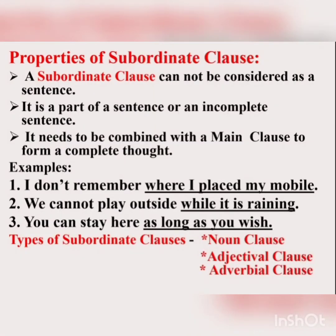Now we are going to see the properties of a subordinate clause. A subordinate clause cannot be considered as a sentence — it is a part of a sentence or an incomplete sentence. It needs to be combined with the main clause to form a complete thought. For example, 'I don't remember where I placed my mobile.' The underlined part — 'where I placed my mobile' — is incomplete. It depends on the main clause for its completeness, so it is a dependent clause or subordinate clause.